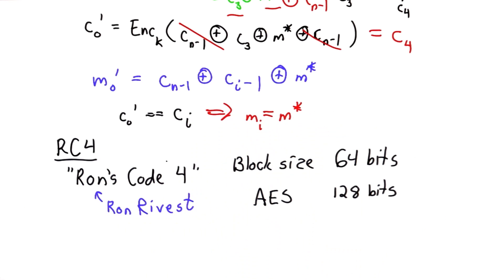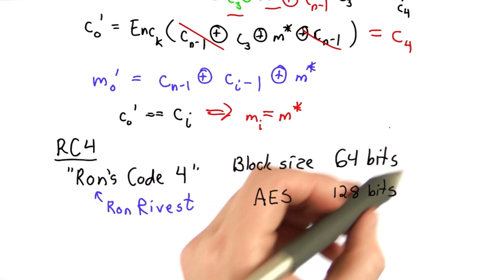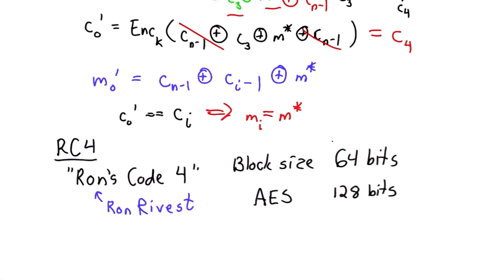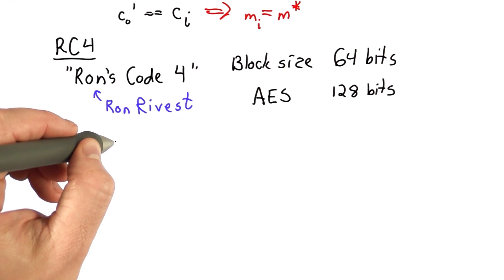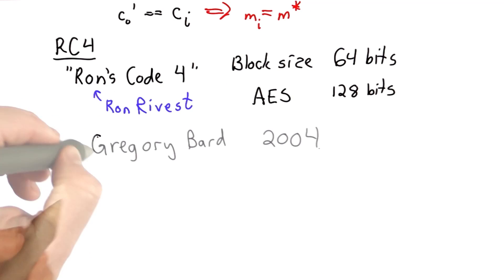That would mean the attack is only useful if the attacker can guess those 64 bits in a useful way and has a way to control the message. That seems like it might not be much of a threat, and this attack was actually known. It was identified by Gregory Bard in 2004.